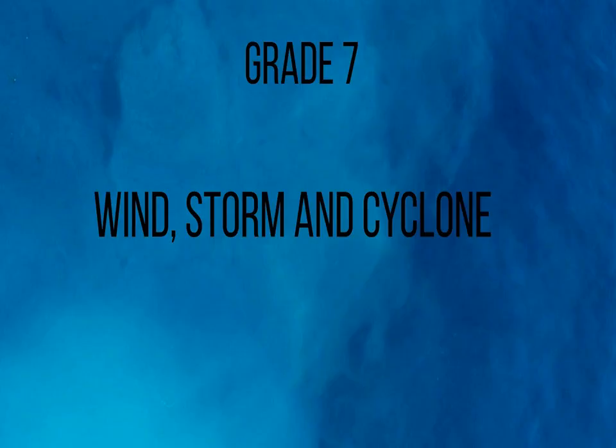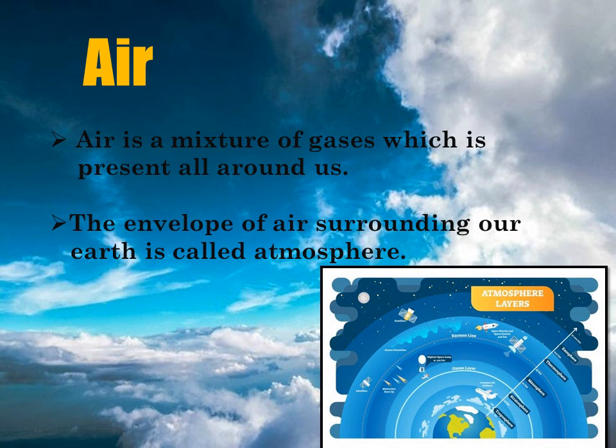Hello students, today we will revise our chapter 'Wind Storm and Cyclone.' Let's see what air is. Air is a mixture of gases which is present all around us. The envelope of air surrounding our Earth is called the atmosphere. The atmosphere consists of many layers, as shown in the figure given below.